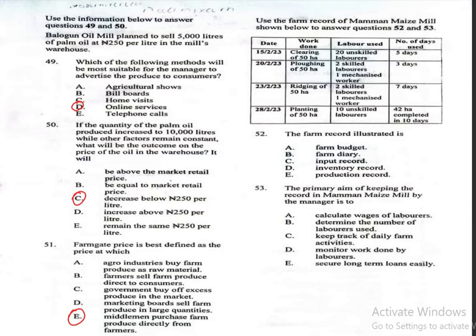Use the farm record of Mama May's farm shown below to answer questions 52 and 53. The record has various dates, work done, labour used, and number of days used. Question 52: The farm record illustrated is A, farm budget; B, farm diary; C, input record; D, inventory record; E, production record. The correct answer is production record, which is option E.